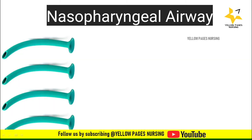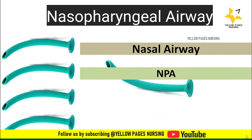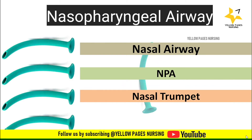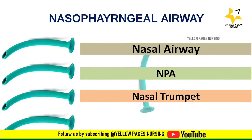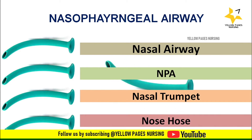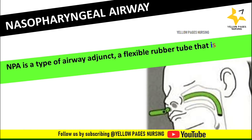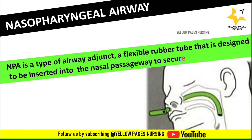Nasopharyngeal airway can otherwise be called as nasal airway, NPA in short, nasal trumpet — because of its flat end which looks like a trumpet — and nose hose. Nasopharyngeal airway is a type of airway adjunct, a flexible rubber tube that is designed to be inserted into the nasal passageway to secure an open airway.